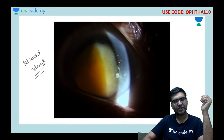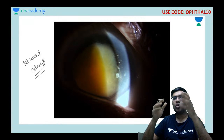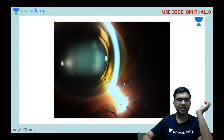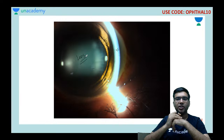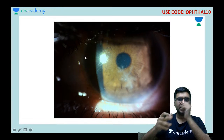That is how a slit lamp image looks. Now, if you ask how a normal clear lens looks — in this image you can appreciate a few opacities here and there, but otherwise it is a clear lens. You can see the reflection from the cornea, the iris, and your crystalline lens.